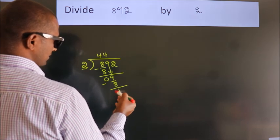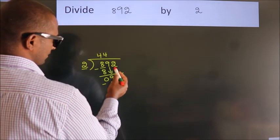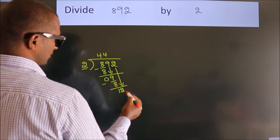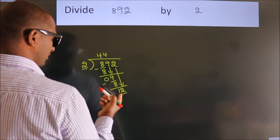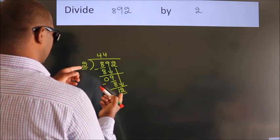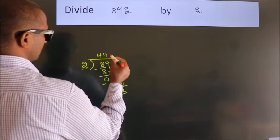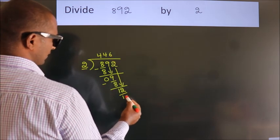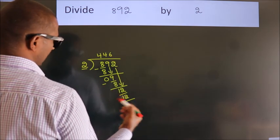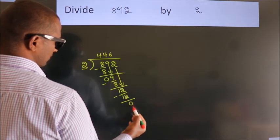After this, bring down the beside number. So 2 down, so 12. When do we get 12? In the 2 table, 2 times 6 is 12. Now we subtract, we get 0.